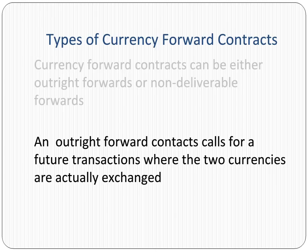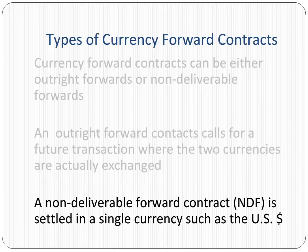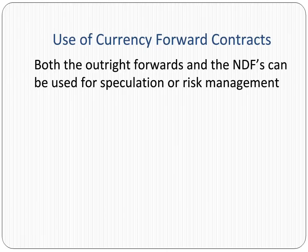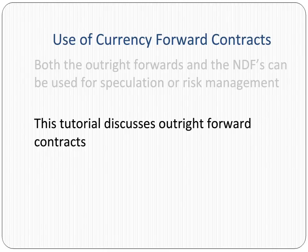An outright forward contract calls for a future transaction where the two currencies are actually exchanged. A non-deliverable forward contract, or NDF, is settled in a single currency such as the US dollar. Both types of forward contracts can be used for speculation or risk management. This tutorial discusses outright forward contracts.